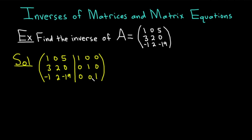The goal is to make everything on the left look like the identity matrix. To do that, we're going to use various row operations. We're going to start by making this circled number a 1, which it already is, and then make the numbers below it zeros. Then we'll make the 2 in the middle a 1 and make the numbers above and below it zeros. Then we'll make the negative 19 a 1 and make the numbers above it zeros. We're going to work one column at a time.